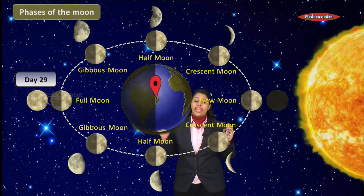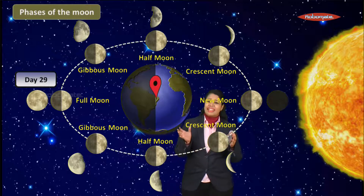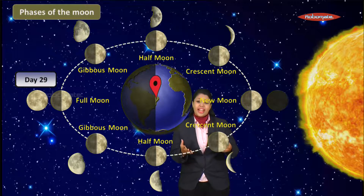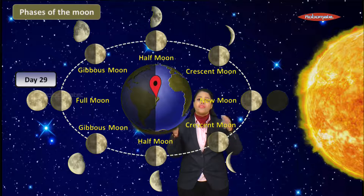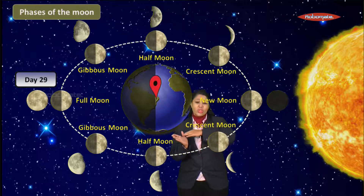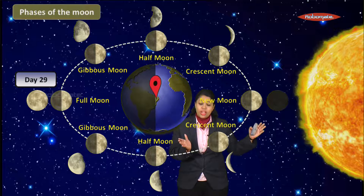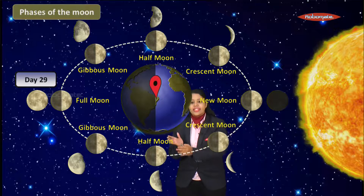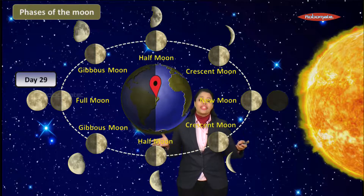Finally, on approximately the 29th day, we have a full moon again. It is not exactly 29 days — it takes more than 29 days, which is how we have one month. So the Moon first goes on waning until new moon, then goes on waxing until full moon again — those are the different phases of the Moon.